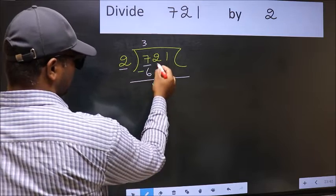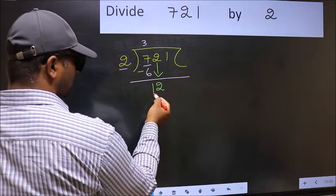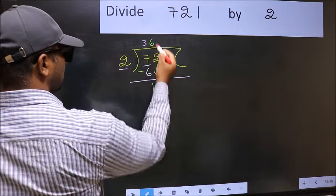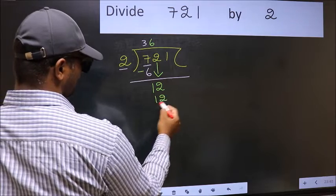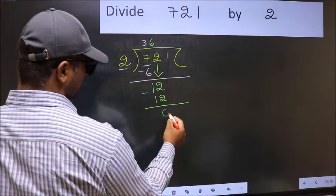After this, you should bring down the beside number. So, 2 down. Now, 12. When do we get 12 in 2 table? 2, 6, 12. Now, you should subtract. 12 minus 12, 0.